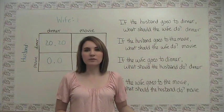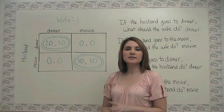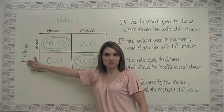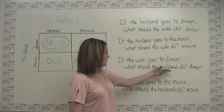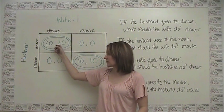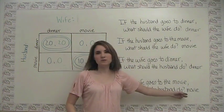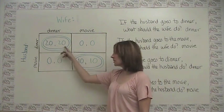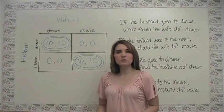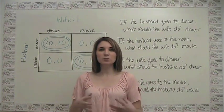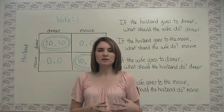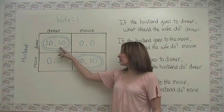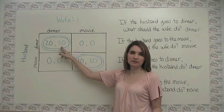So how do we think about what the equilibrium in this situation is going to be? Just like in the previous example, I've circled the husband's best responses in blue. If the wife goes to dinner, the husband wants to go to dinner. If the wife goes to the movie, the husband wants to go to the movie. Similarly, I've circled the wife's best responses in green. A Nash equilibrium is a situation where each player's strategy is a best response to what they think the other person is doing — so Nash equilibria are the places where you see both a blue circle and a green circle.